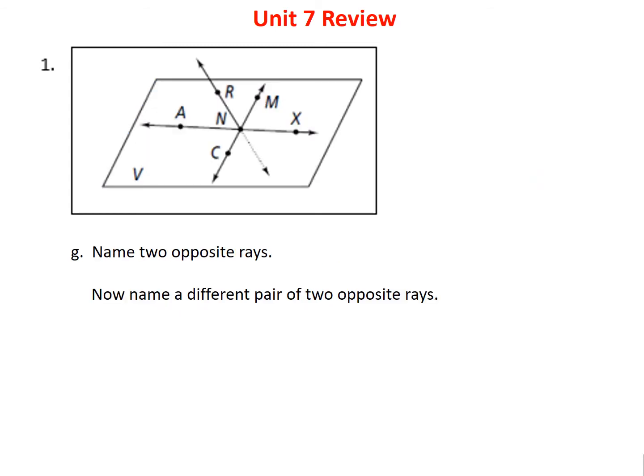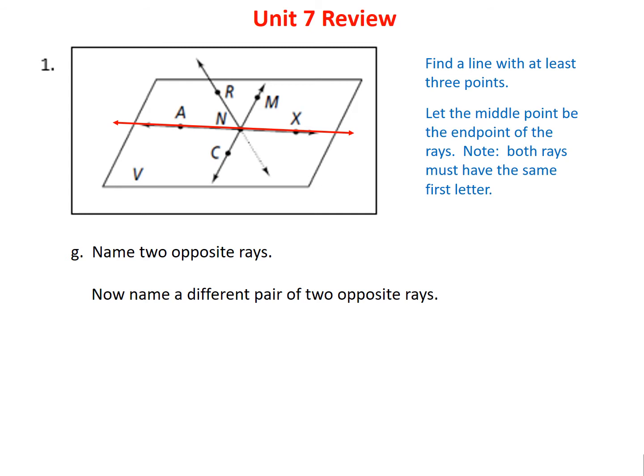Problem 1G says to name two opposite rays. To do this, find a line with at least three points and let the middle point be the endpoint of the rays. For line A, N, X — let N be the middle — I have ray NA going left and ray NX going right. For a different pair, using line C, N, M, I have ray NC and ray NM. Both pairs are opposite rays, sometimes called a linear pair because together they form a straight line.